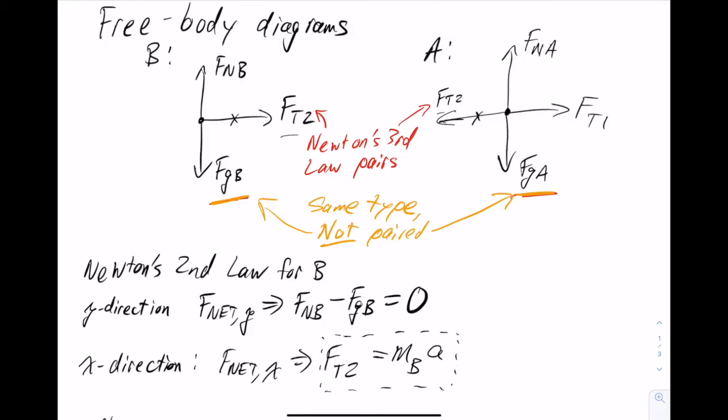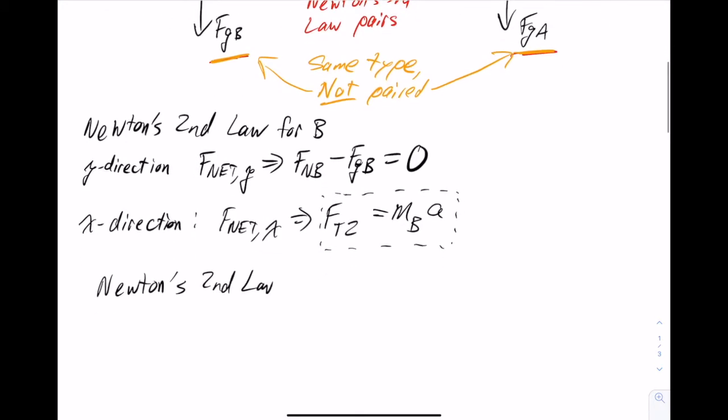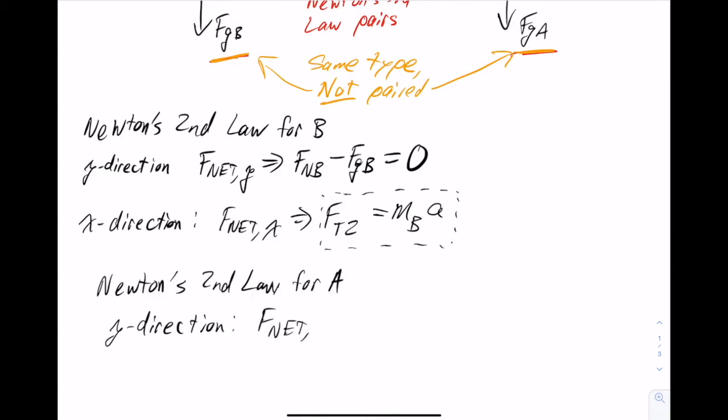And now let's look at Newton's second law for train A. So again, in the y direction, we can say F net y is going to be the normal force. A is positive, the force of gravity A is negative, and then we have that equal to zero because there's no acceleration in that direction. We're not going to do anything with that, but it's there in case we ever need it.